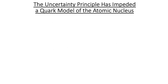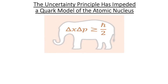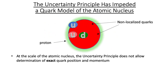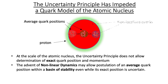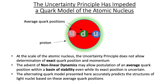But it's not quite that simple — we must address the uncertainty principle. At the scale of the atomic nucleus, the uncertainty principle does not allow determination of exact quark position and momentum. The advent of nonlinear dynamics, however, may allow postulation of an average quark position within a basin of stability, even while its exact position is uncertain. The alternating quark model accurately predicts the structures of light nuclei based on these average quark positions.